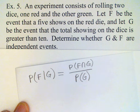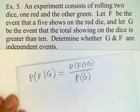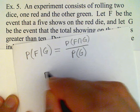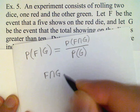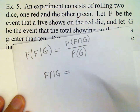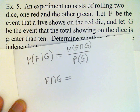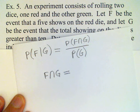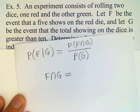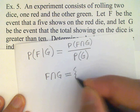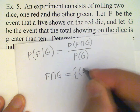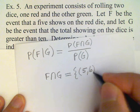Since rolling dice produces equally likely outcomes, we just need to count the elements in these sets. The intersection of F and G requires a five on the red die and a total greater than ten. There is only one way to achieve this: a five on the red die and a six on the green die.